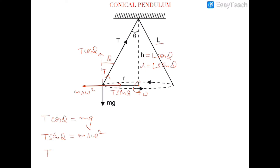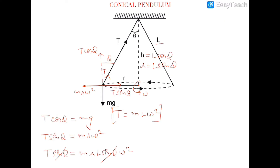Substituting the value of r, which equals l sin theta, into T sin theta equals mr omega squared and cancelling sin theta, the tension T equals ml omega squared. This is the first important conclusion of the conical pendulum: tension equals ml omega squared, where m is the mass of the bob, l is the length of the rope, and omega is the angular velocity.